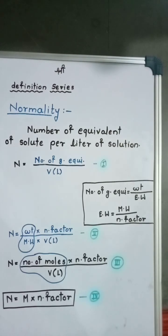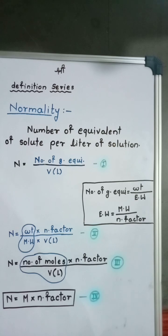Hello students. In this definition series, today we will see the definition of normality. The definition is: number of equivalents of solute per liter of solution. The formula for normality is the number of gram equivalents divided by volume in liters.